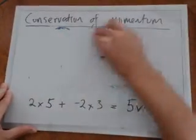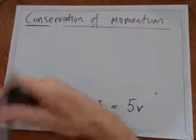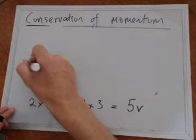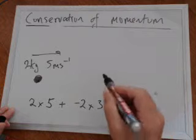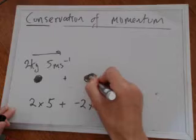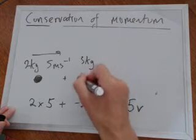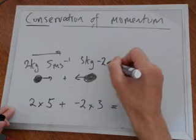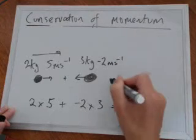So let's draw it above the situation. We have a ball here, 2 kilograms, 5 meters per second. It'll collide with an object or a ball or whatever here with 3 kilograms, and going the opposite direction, making that negative 2 meters per second.